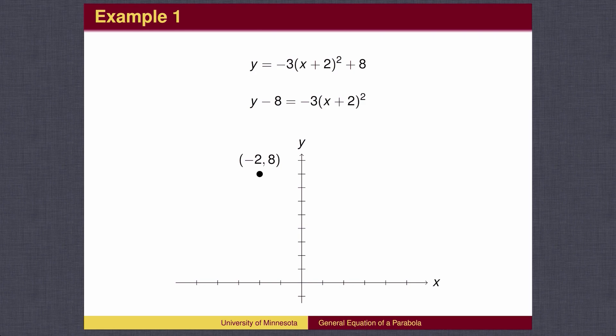Instead of going right 1 and down 1, we will go right 1 and down 3 to the point (-1, 5). Similarly, 1 left and 3 down puts us at (-3, 5). We could find points that went left or right 2 and down 3 times the usual 4 or 12 to -4, placing points at (0, -4) and (-4, -4), but we don't have room here. We can then draw the parabola.